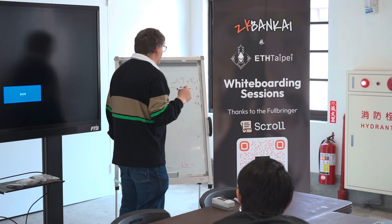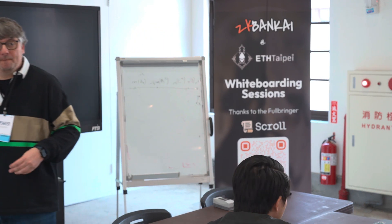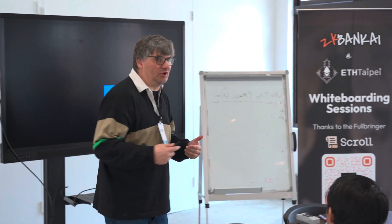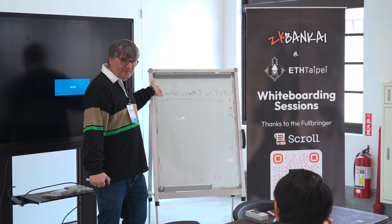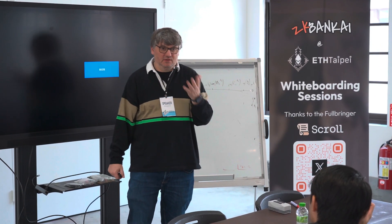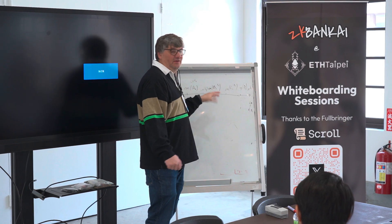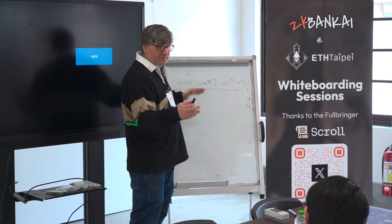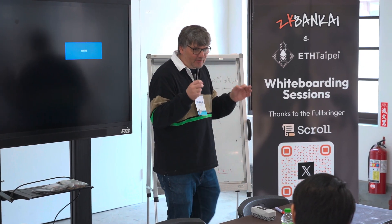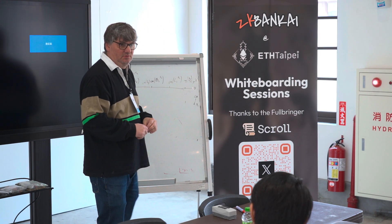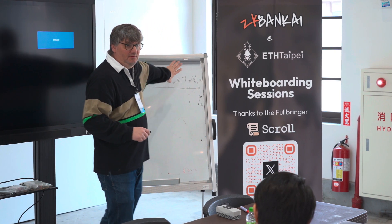Once committed to a state, chains cannot change the state — they can move forward but they cannot go backwards. That's why we need this. If you think of this as a blockchain — it's just a consensus — you don't really require a blockchain for this, but the easy way to understand it is as a blockchain. You can scale much better, but that's another problem.